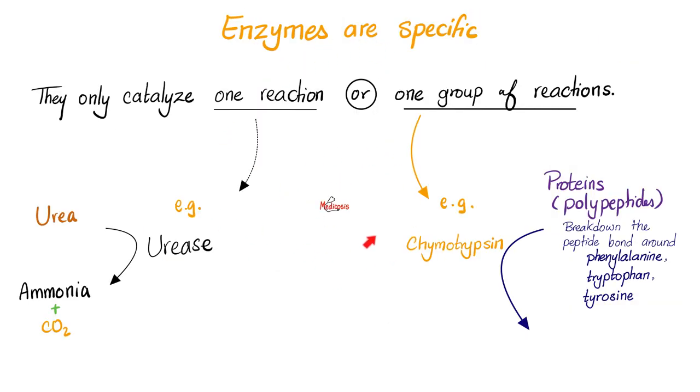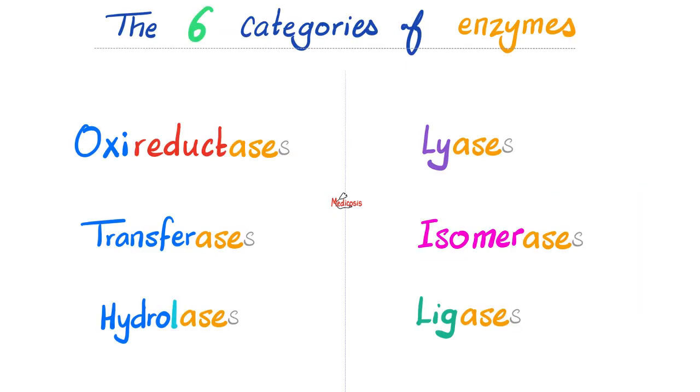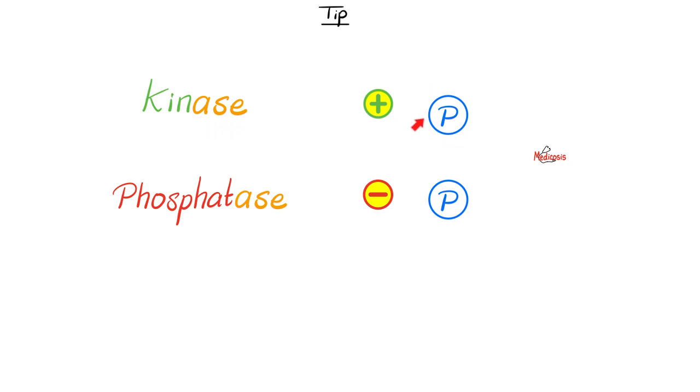Enzymes are specific. Please pause and review. There are six categories of enzymes, as we have discussed in the last video. A kinase is an enzyme that adds a phosphate, but a phosphatase is an enzyme that removes a phosphate. Please recall that kinase is an example of transferases, but phosphatases are examples of hydrolases, because they break down the phosphate in the presence of water.